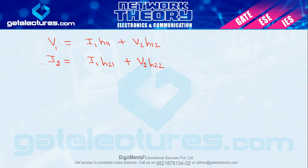एक बहुत ही simple trick है — current और voltage को मिलाकर total 4 terms होते हैं: v1, v2, i1, and i2. अगर आपने left hand side में 2 terms use कर लिए हैं, तो remaining 2 terms आपके right hand side में दोनों equations में use होंगे. Suppose आपने left hand side में v1 and i2 use किया, तो remaining i1 and v2 रहे. आपकी preference होगी first 1 then 2 — so i1, v2 and i1, v2.